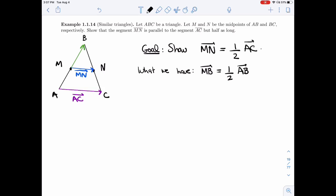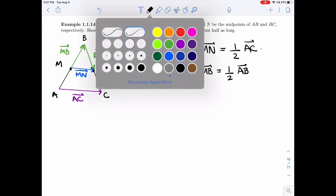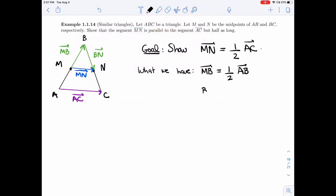And similarly for the other side, the vector, I'm going to draw it as BN. You'll see why in a second, but it doesn't matter. Both are true. So BN is here and BC is here. The second thing we know is BN is a half of BC. That's what we have.